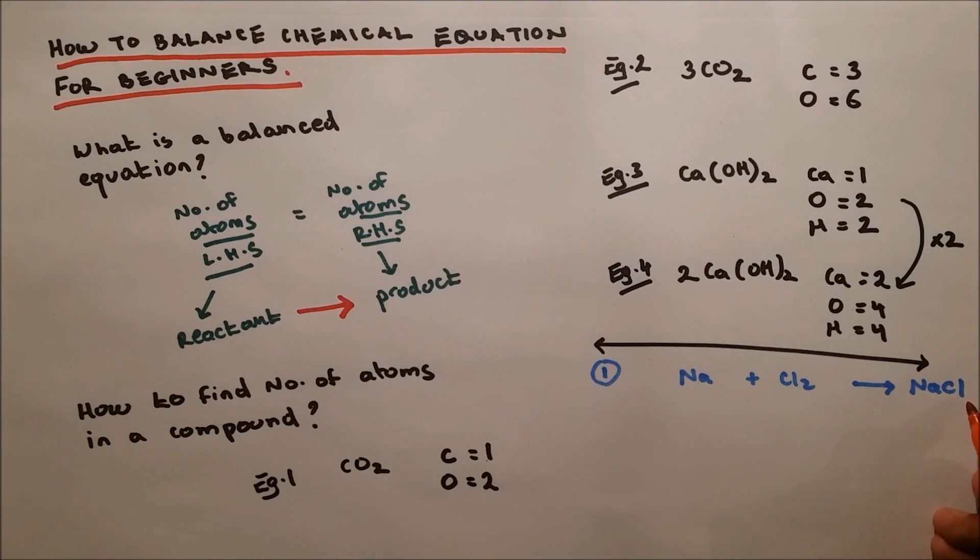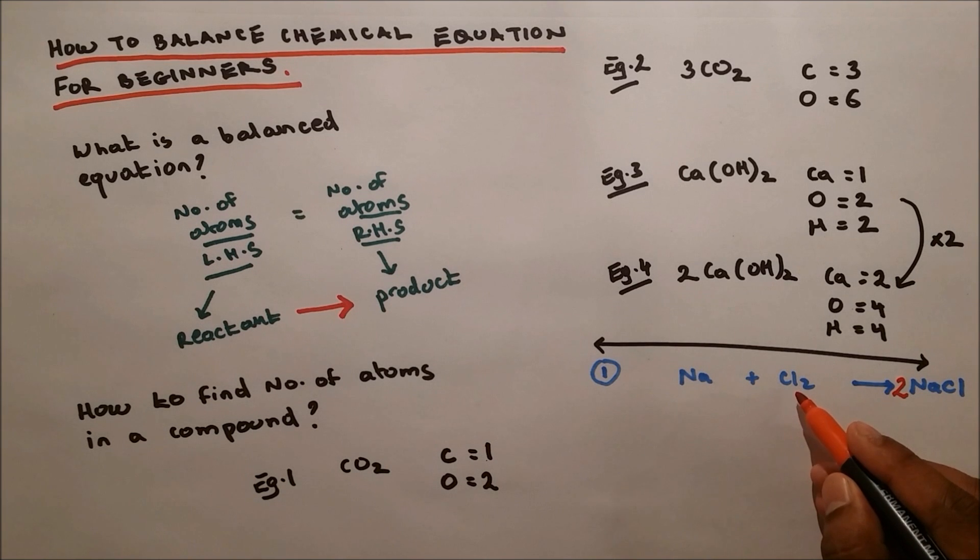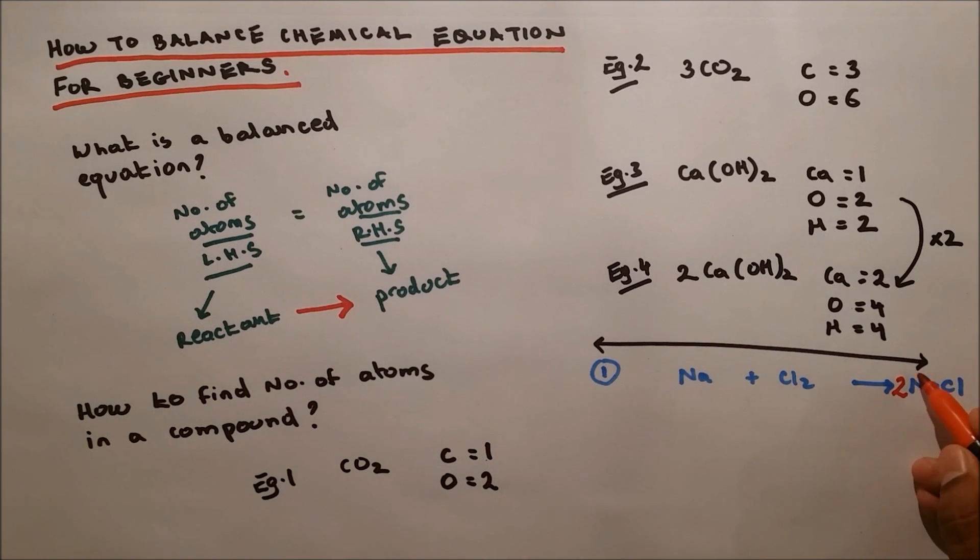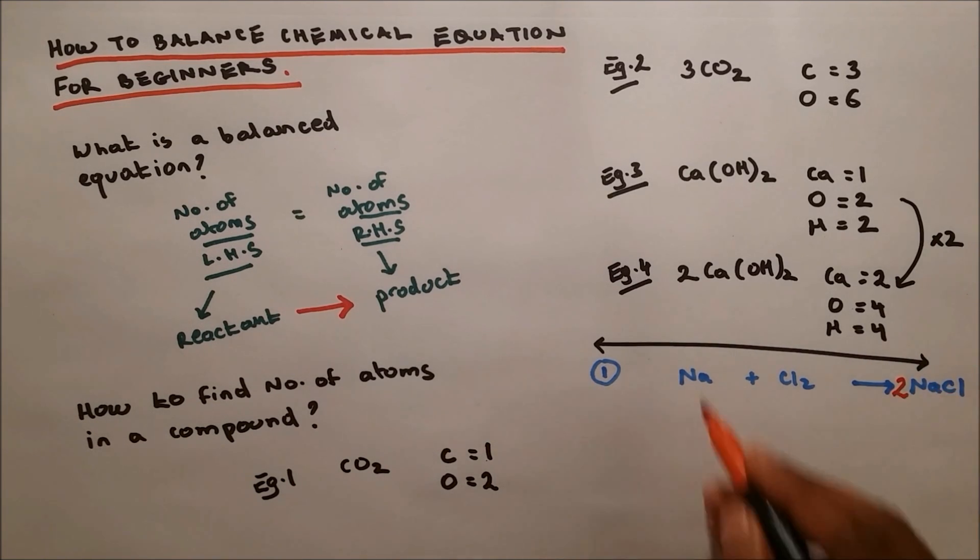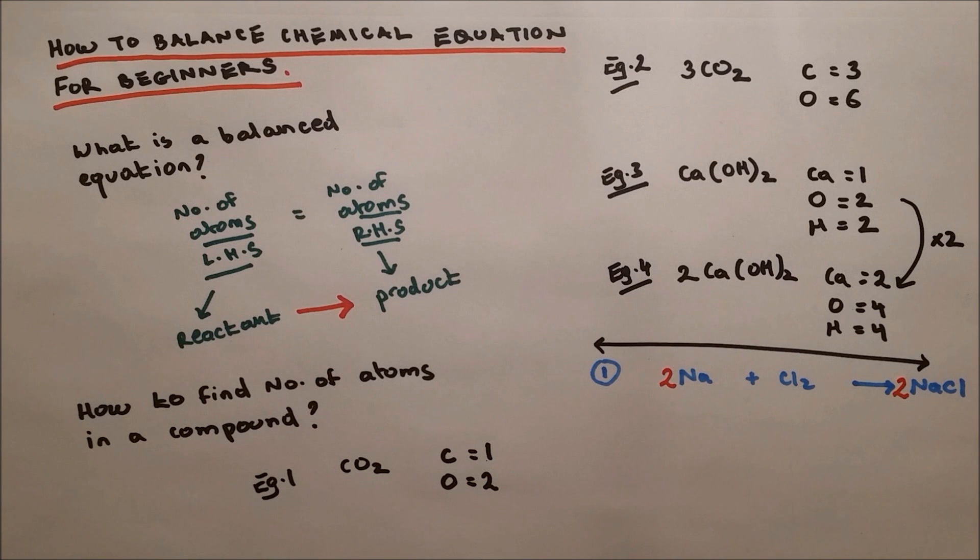We cannot put a subscript two here. That will change the compound. We're not allowed to do that. So we put a coefficient two here: 2NaCl. Now we have two chlorine on each side. That's perfect. But now we have two sodium on the right and one on the left. So we put two in front of sodium: 2Na + Cl2 → 2NaCl. It's very simple.